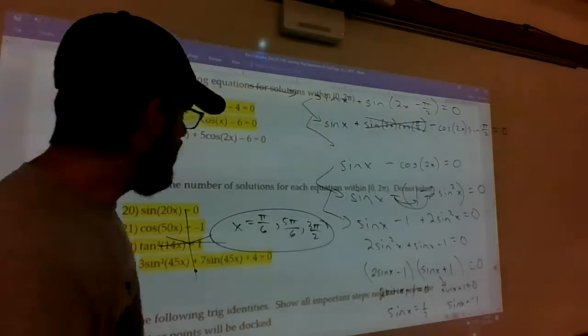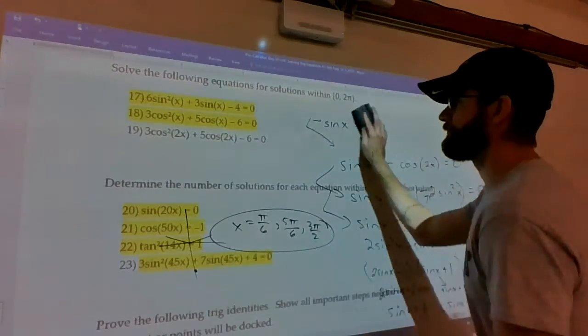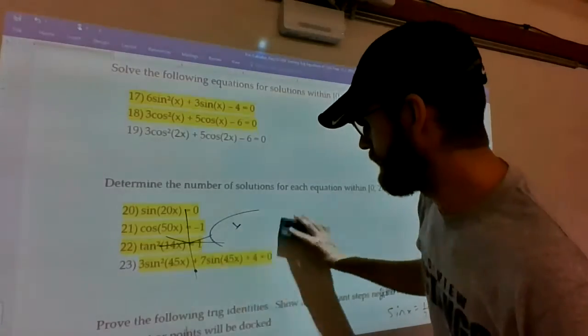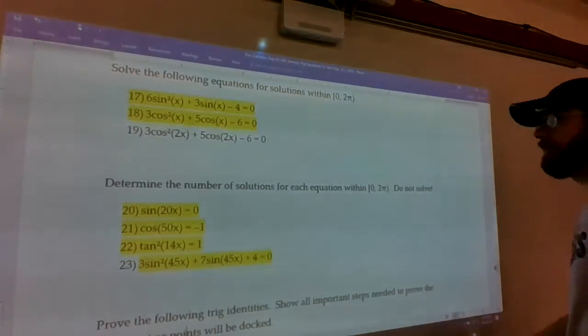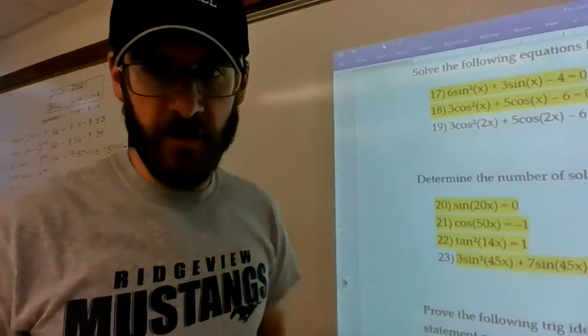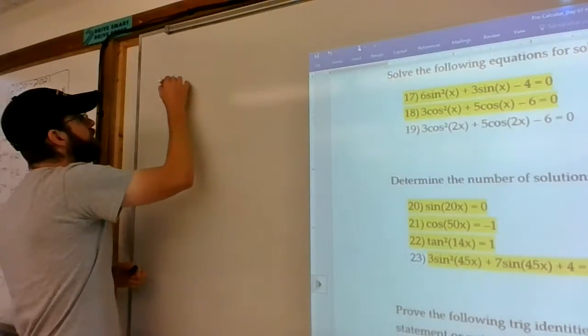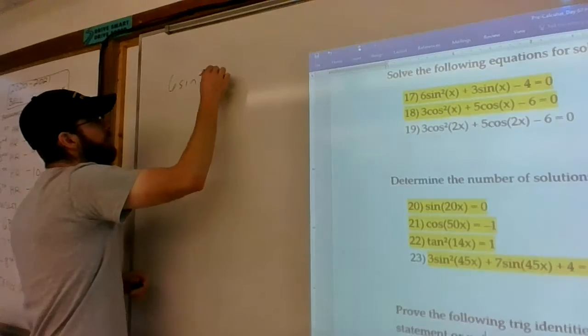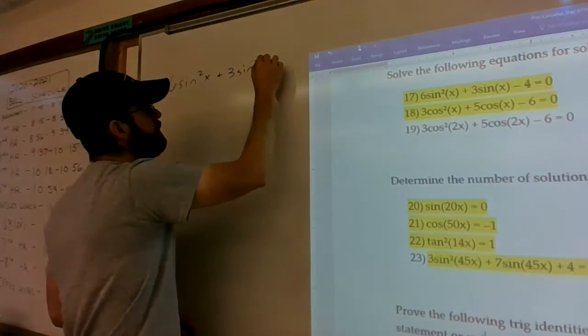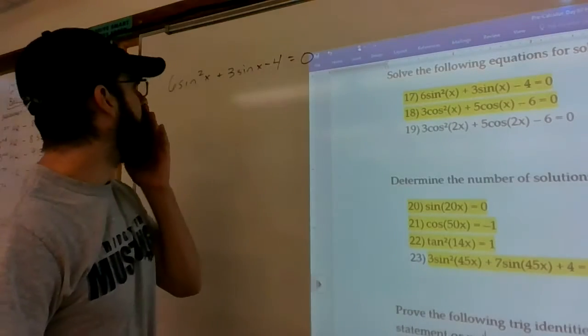Alright. Highlighting these two right here, you'll find out why. I'm going to go over this side of the board. It's getting lonely. So 6 sine squared of x plus 3 sine... No, it's still sine.